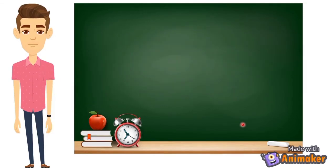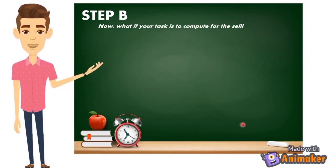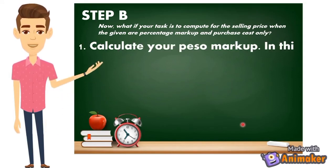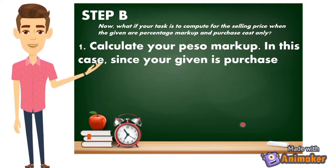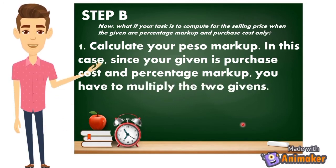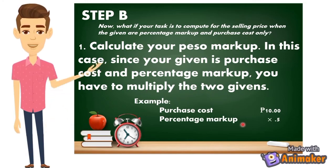Now let's move on to Step B. What if your task is to compute for the selling price when the given information is only the percentage markup and purchase cost? For step B1, calculate your peso markup: since your given values are purchase cost and percentage markup, you multiply the two together. For example, with a purchase cost of 10 pesos and a percentage markup of 0.5 (or 50 percent), the peso markup will be 5 pesos.